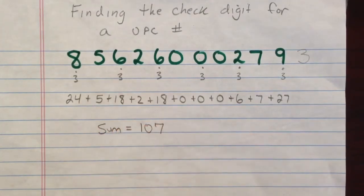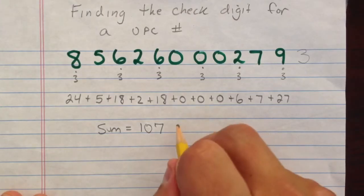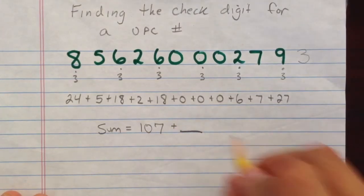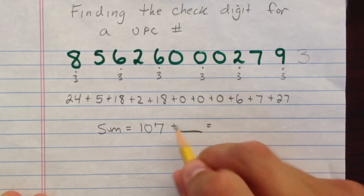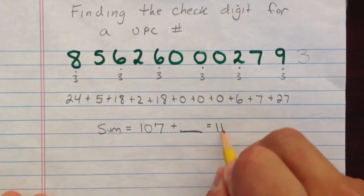Again, we have to ask ourselves with a UPC number, what do we have to add to that to create a multiple of 10? The next highest multiple of 10 would be 110.